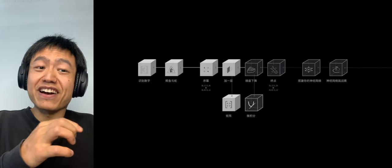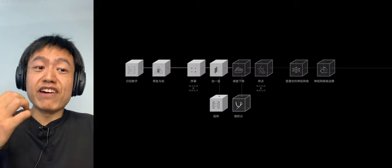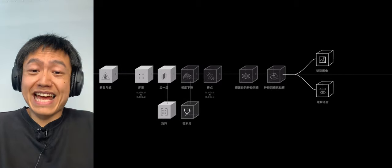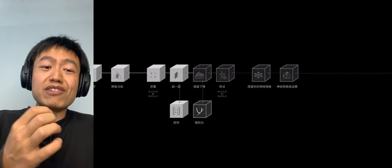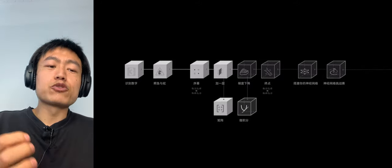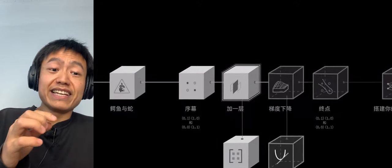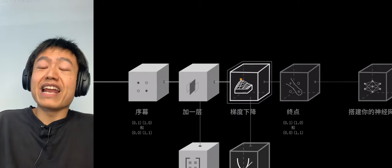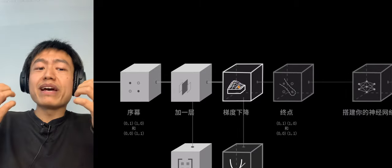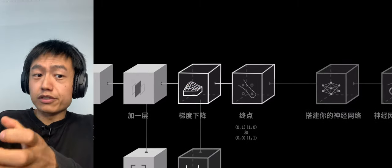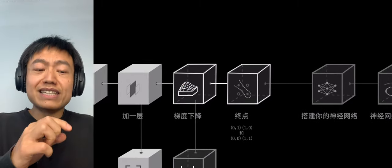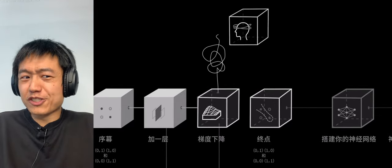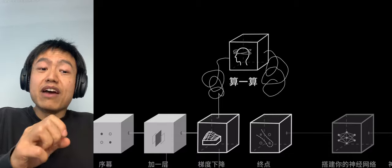As long as it can classify, the machine can develop the ability to recognize images and process language. Now we have a neural network. Theoretically, it can solve any classification problem. This gradient descent algorithm allows the machine to automatically adjust the parameters. Then there is only the last step away from the birth of artificial intelligence, frantically deriving the parameters.